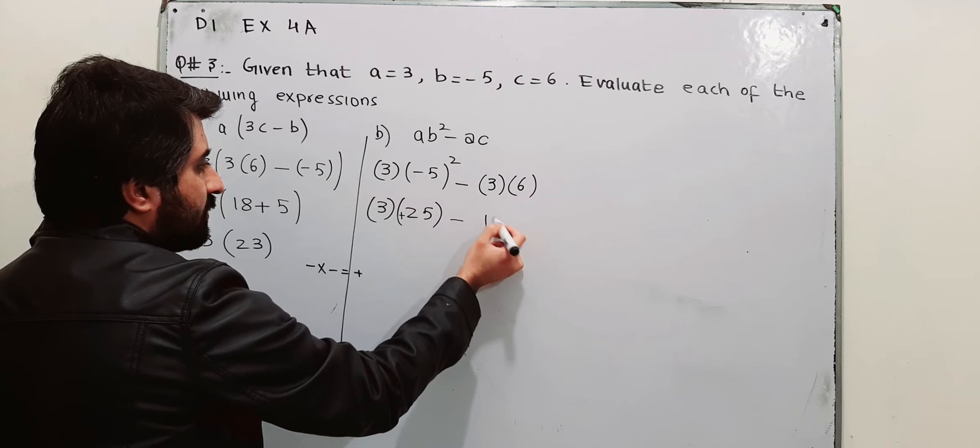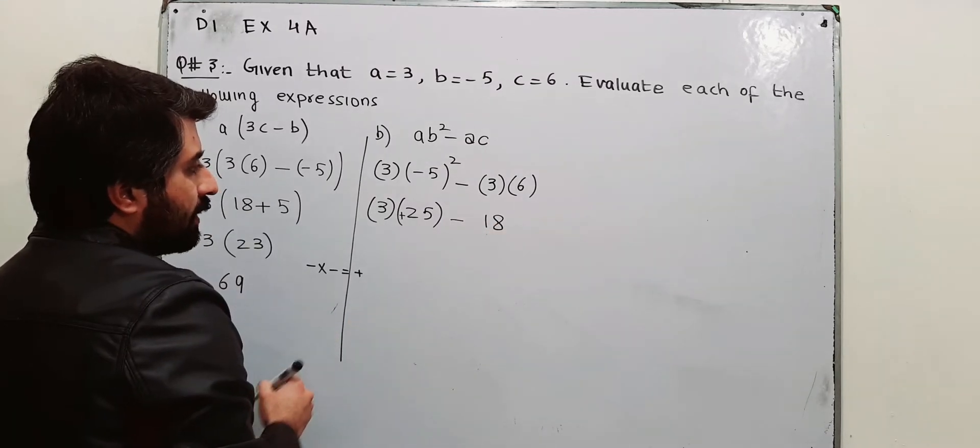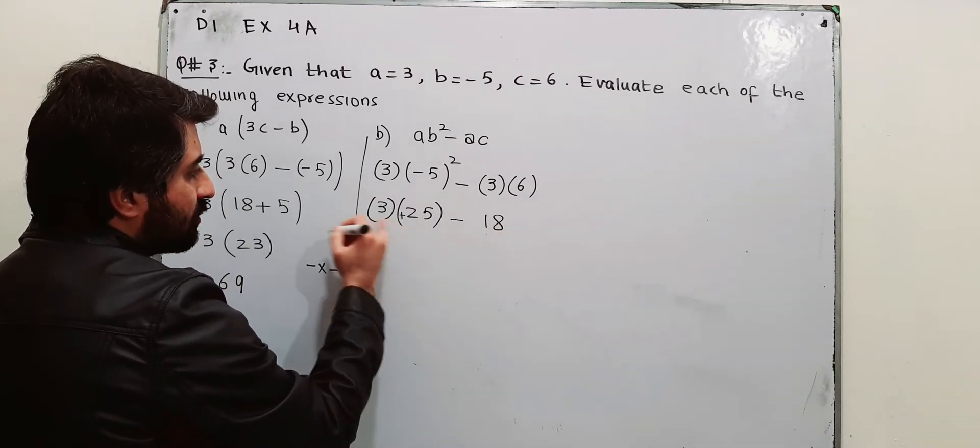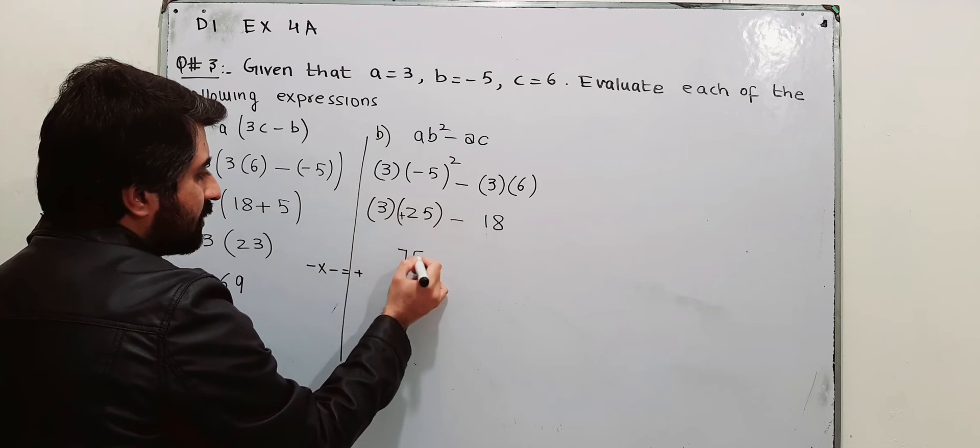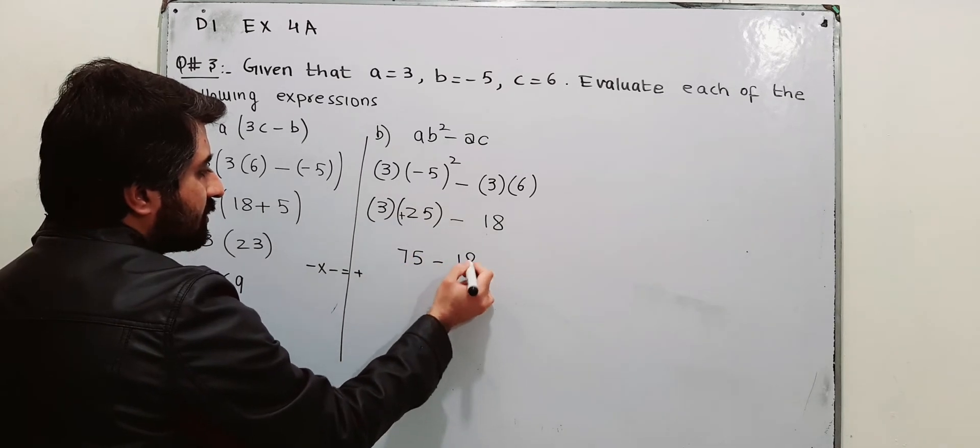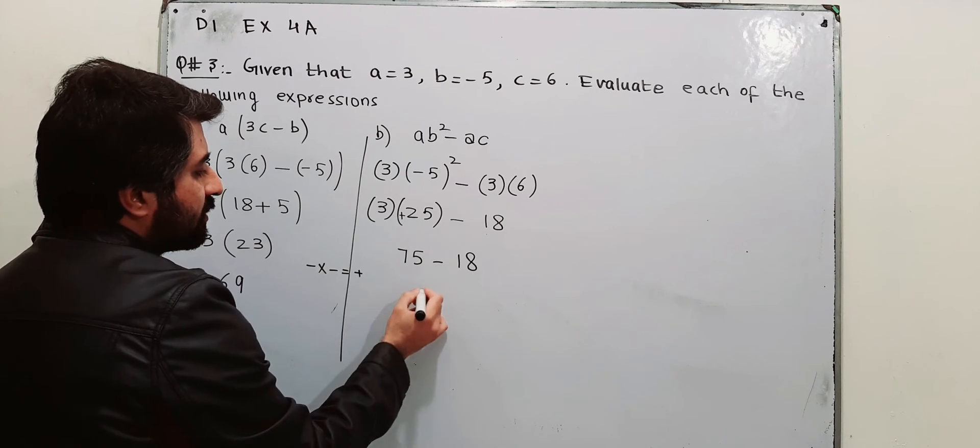3 times 18. Following the BODMAS, 25 into 3, 75 minus 18. That will give you 57. This is the answer for part number B.